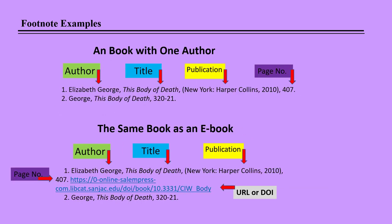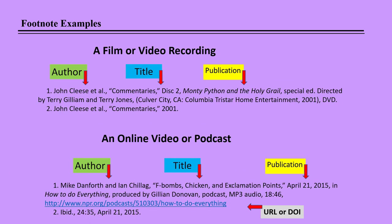Book and ebook citations are very similar. Notice that the second and subsequent citations of electronic items do not require the URL or DOI, as those have already been included in the initial citation of the item.